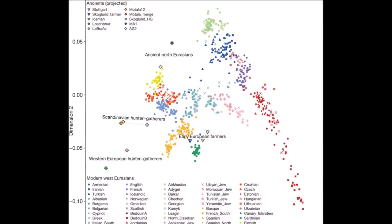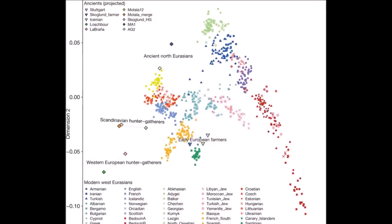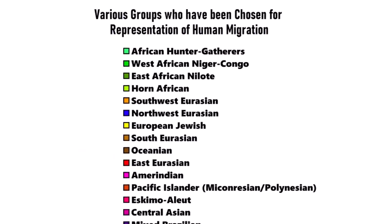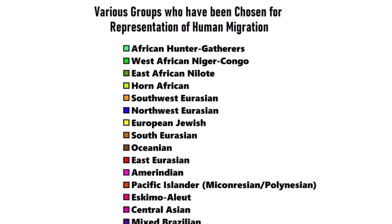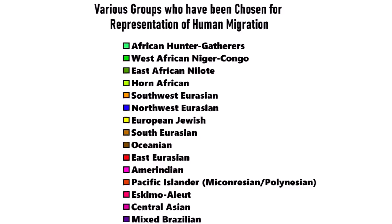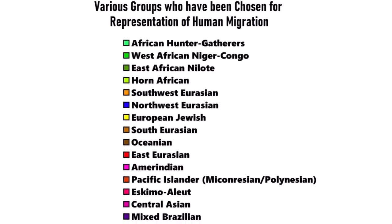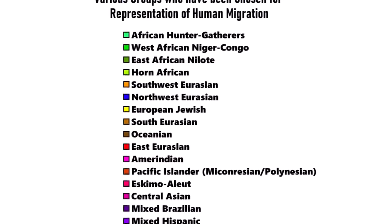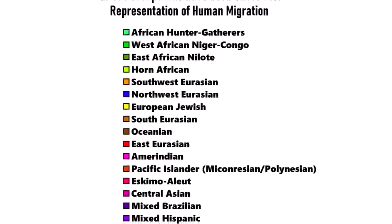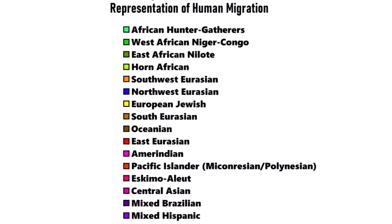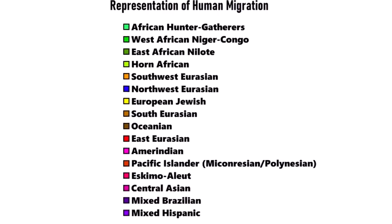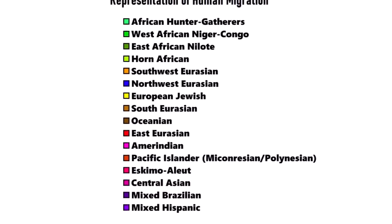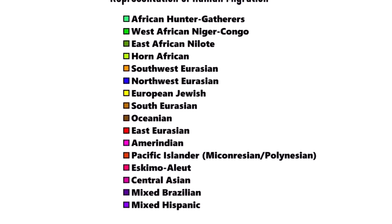I only differentiated 16 different human clusters for migration patterns throughout the world, even though you could say that there are many, many more clusters, but these are the groups that have traversed huge swaths of land, sometimes even ending up in the most bizarre and unexpected of places.